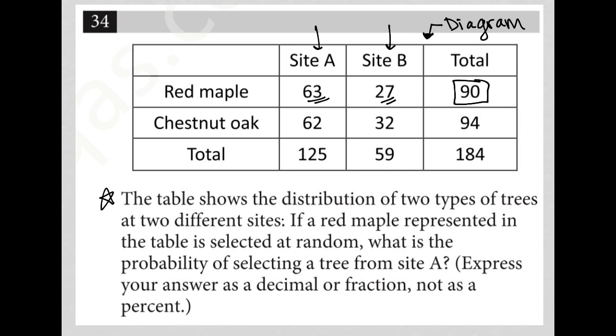Now the question asks: if a red maple represented in the table is selected at random, what is the probability of selecting a tree from site A? So if all I'm selecting from is red maple, chestnut oak are not a part of this question at all. I only care about red maple.